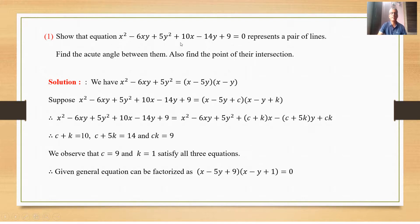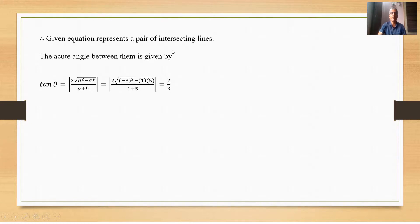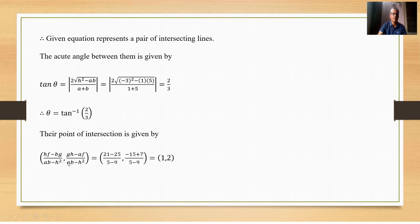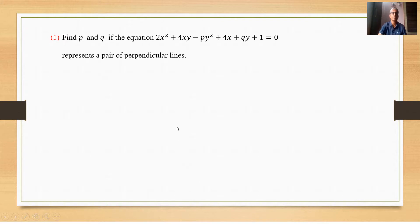This is the general second-degree equation. The acute angle is given by tan θ = 2/3. Their point of intersection is found using the intersection formula, and the point of intersection is determined accordingly.